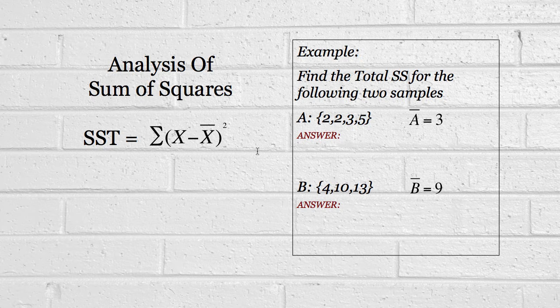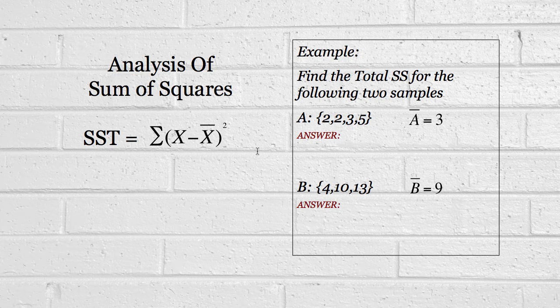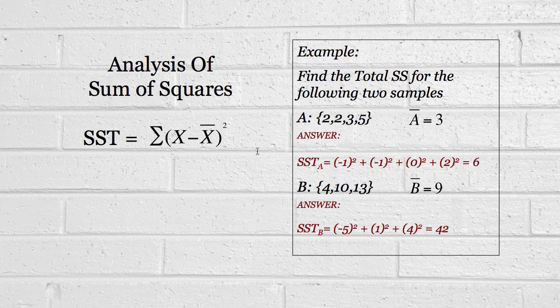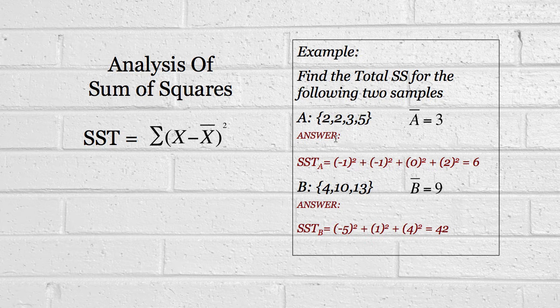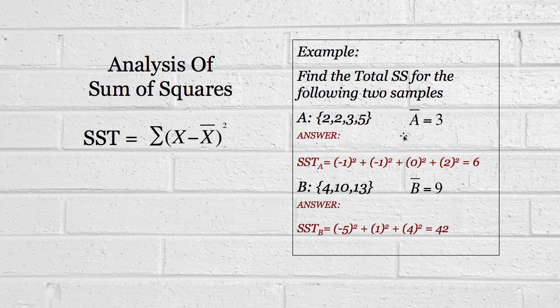With that done, the first step is to find the means of these two samples, which is simple enough. The mean of A is 3 and the mean of B is 9. Now, the SST for A, using this formula, I'll just go through it very quickly. We take each of these observations in turn. We go 2 and then we subtract 3. We subtract the mean and then square it. 2 minus 3 is minus 1 and we square it.